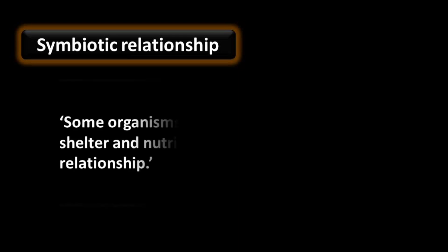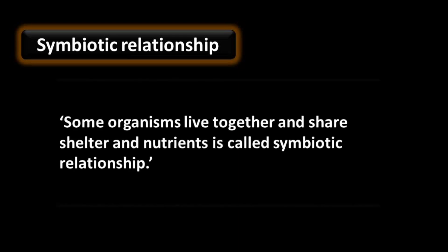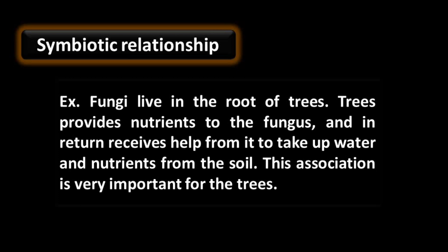Symbiotic relationship — some organisms live together and share shelter and nutrients; this is called a symbiotic relationship. For example, fungi live in the roots of trees. Trees provide nutrients to the fungus, and in return the fungus helps the tree take up water and nutrients from the soil. This association is very important for trees. Fungus gets shelter and food from the trees and provides water and nutrients from the soil to the trees.